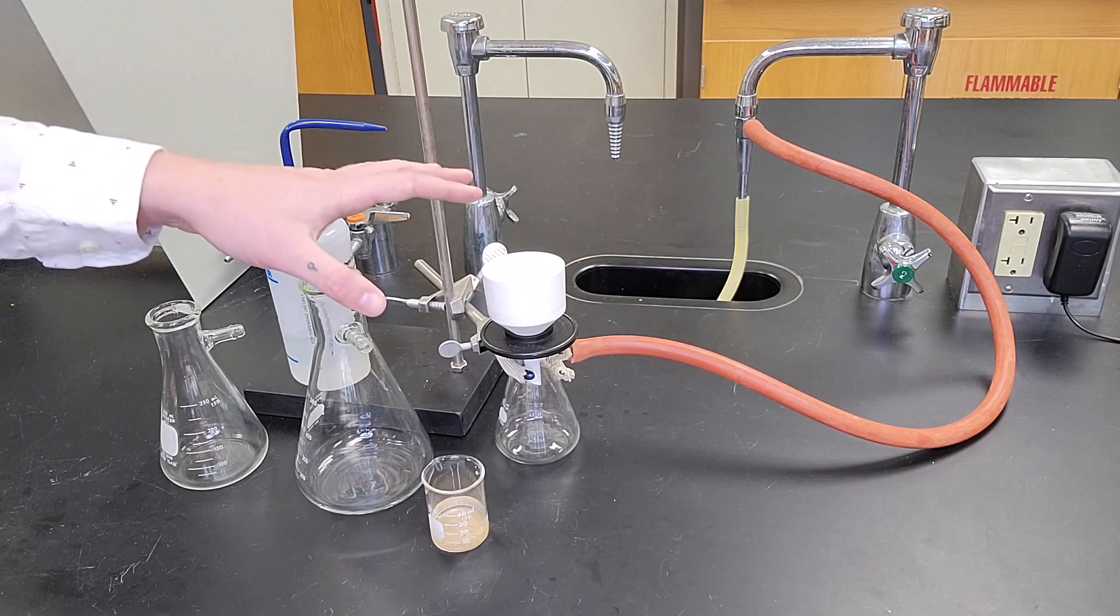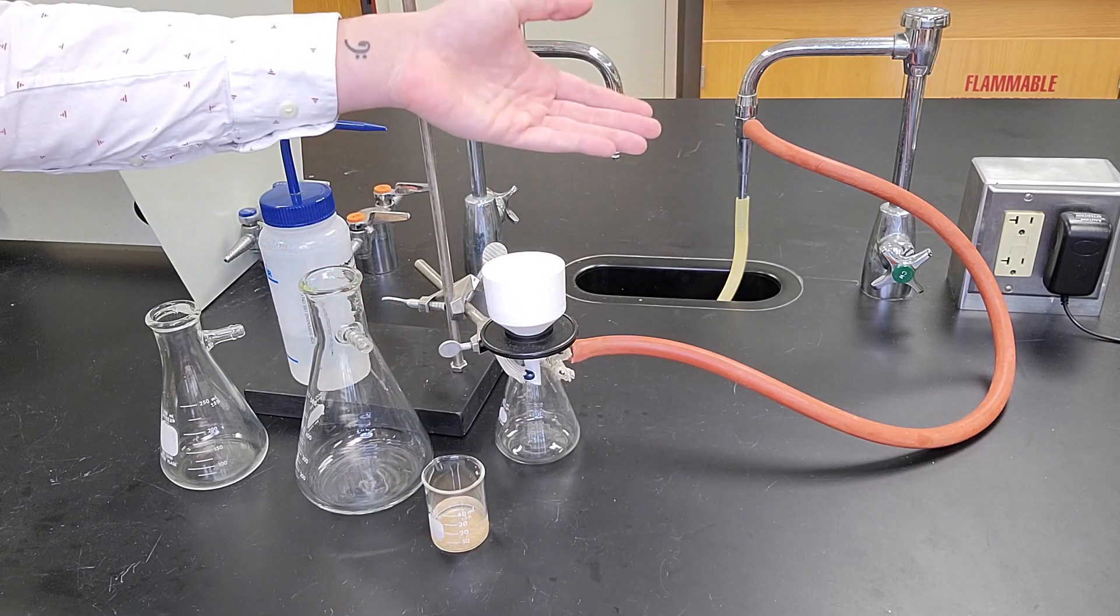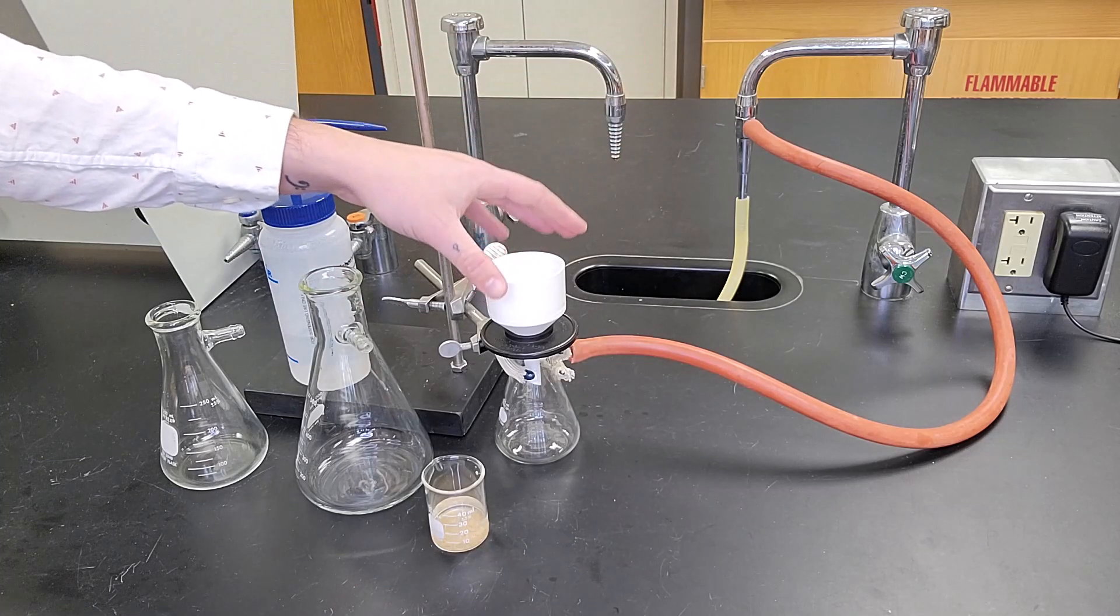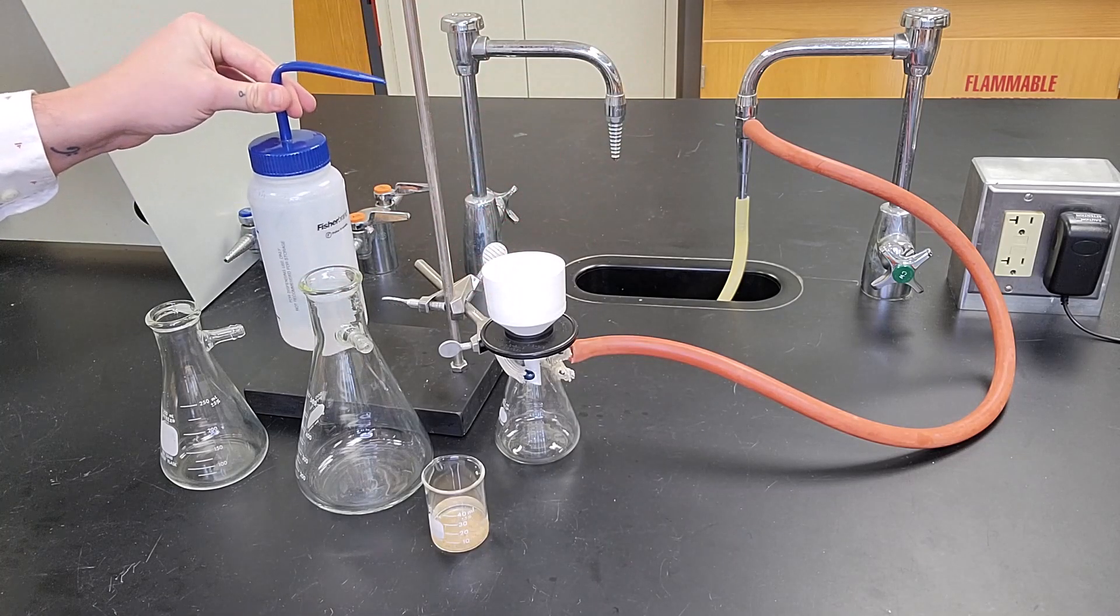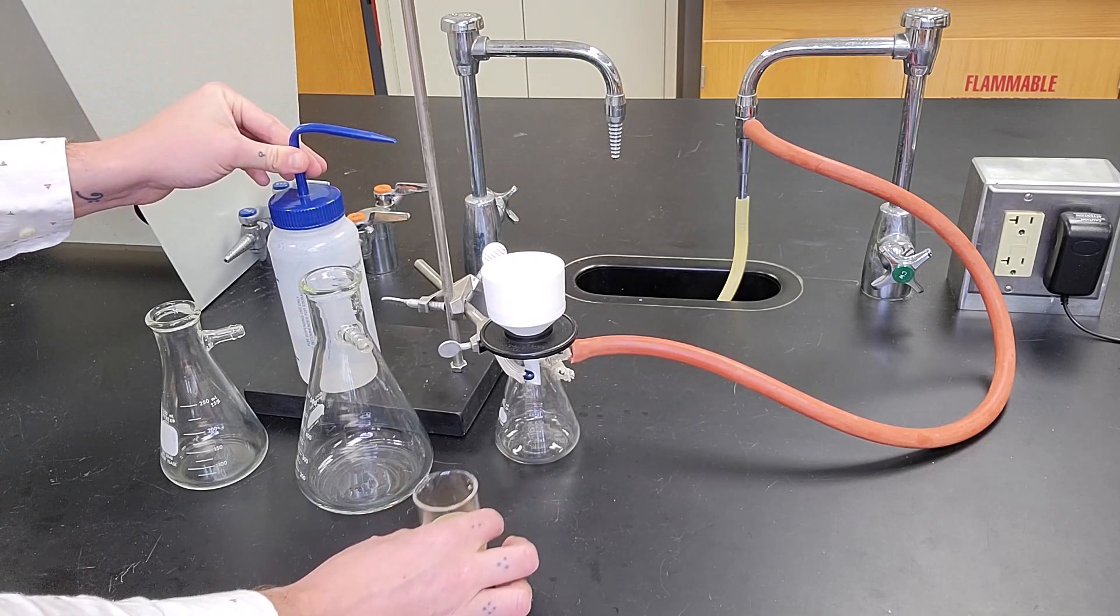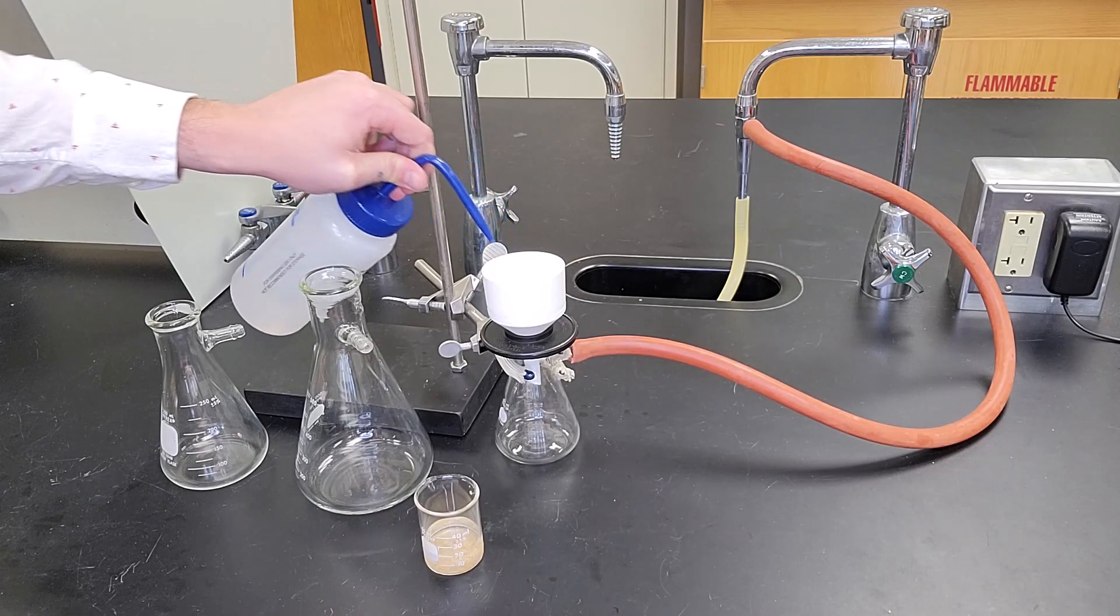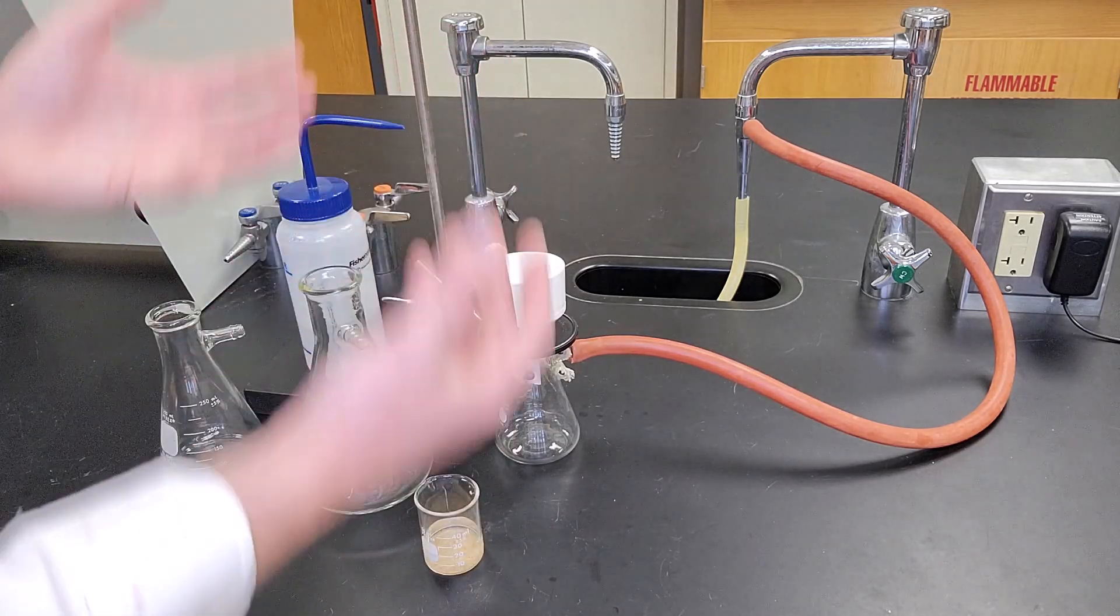The steps in which we do a vacuum filtration: we're going to turn on the water or turn on the vacuum pump, whichever one you're using. I'm then going to take a solvent bottle—in this case my solvent is water—and I'm just going to wash my filter paper with water and let it pull through.